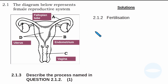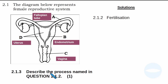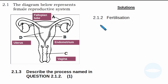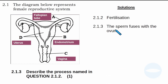Question 2.1.3 says: describe the process named in question 2.1.2. We have to describe what happens during fertilization. The mark allocation is only one mark, so you just have to state what is happening. During fertilization, the egg cell fuses with the sperm cell. The sperm cell contains genetic material and delivers it to the egg cell, and then a zygote is formed. So for 2.1.3: the sperm cell fuses with the ovum.